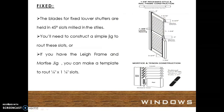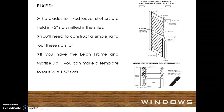Fixed louvered windows. The blades for fixed louver shutters are held in 45-degree slots milled in the stiles. You will need to construct a simple jig to route these slots, or if you have the lay frame and mortise jig, you can make a template to route one-quarter inch by one and one-quarter inch slots.